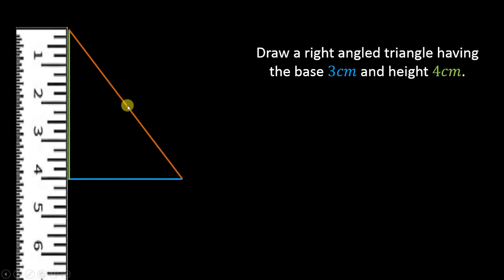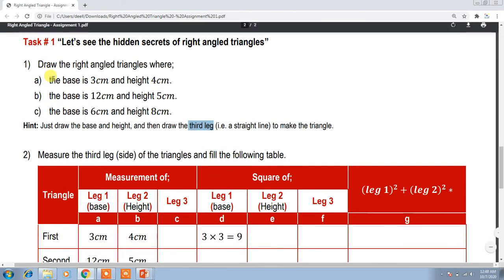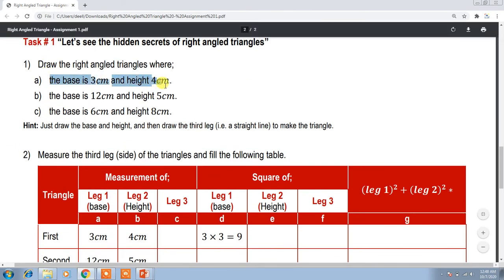Now we can see that our triangle is made. Now we will go to this triangle to fill the table. I will show you the first triangle — you can make the other two triangles one by one, in the same way we have made this one.